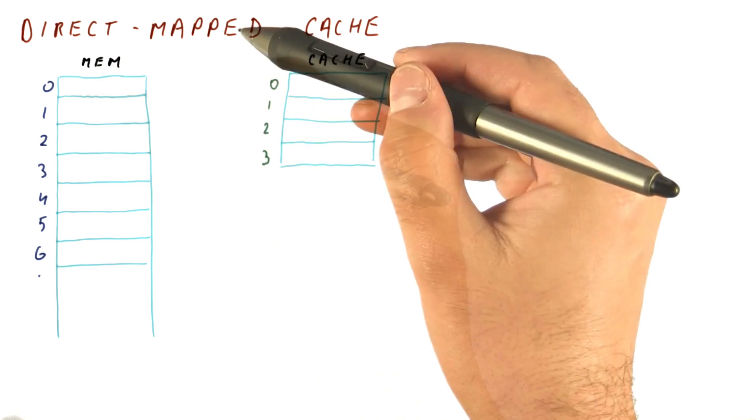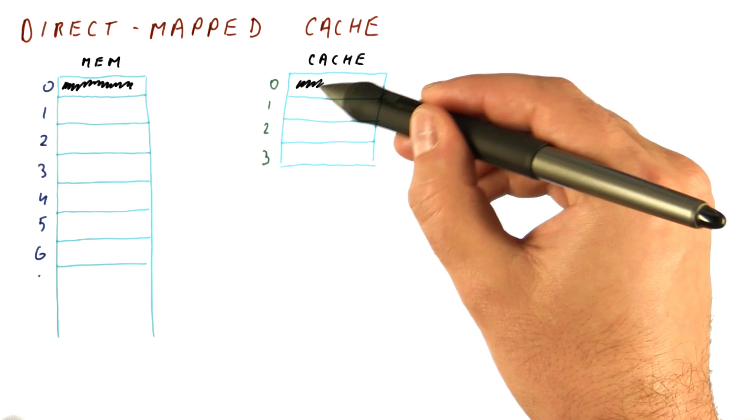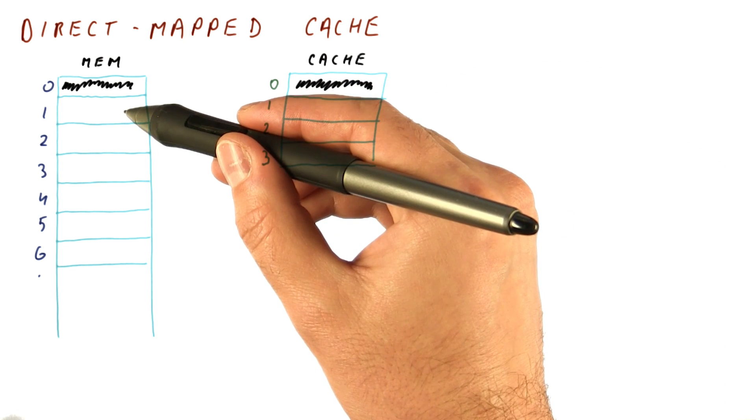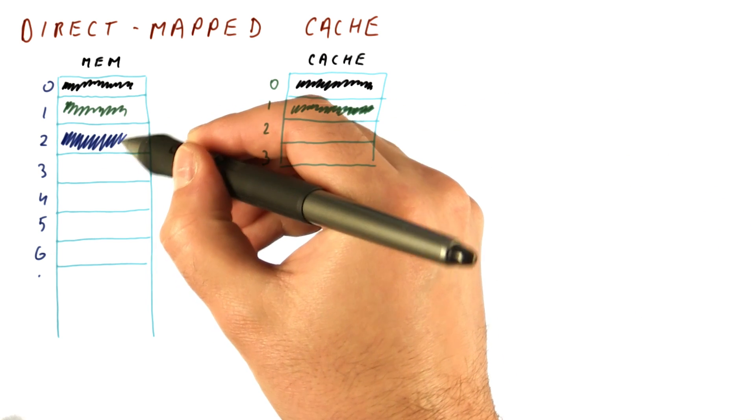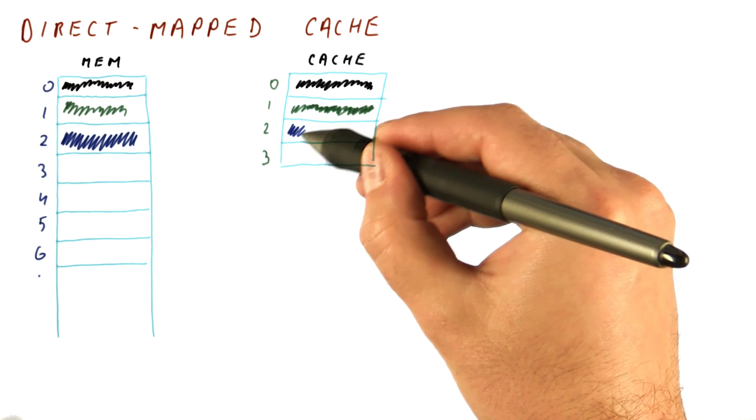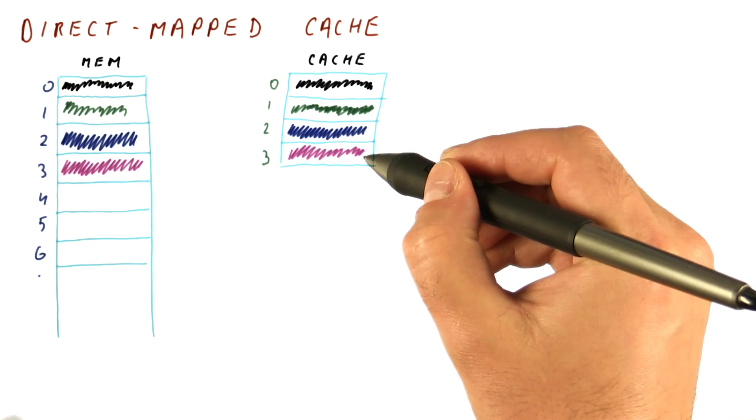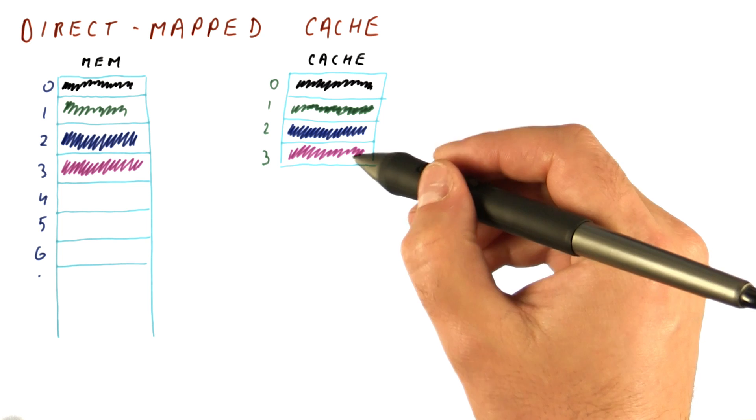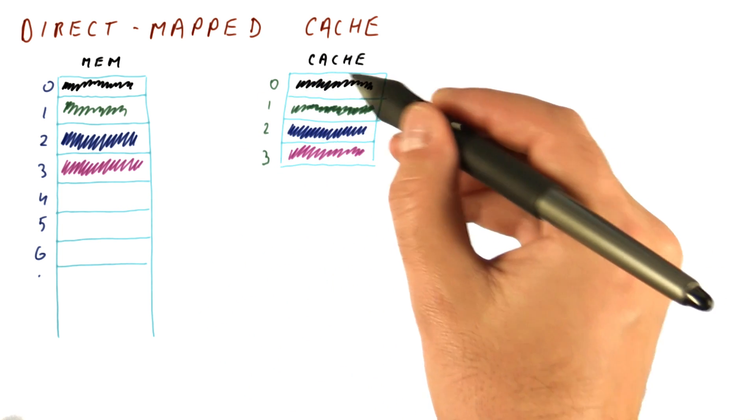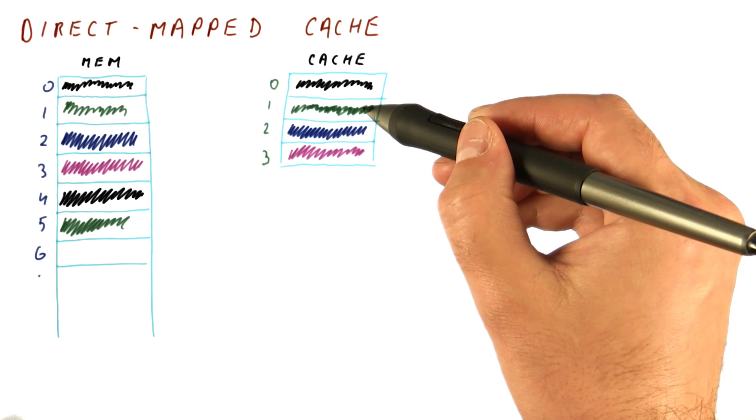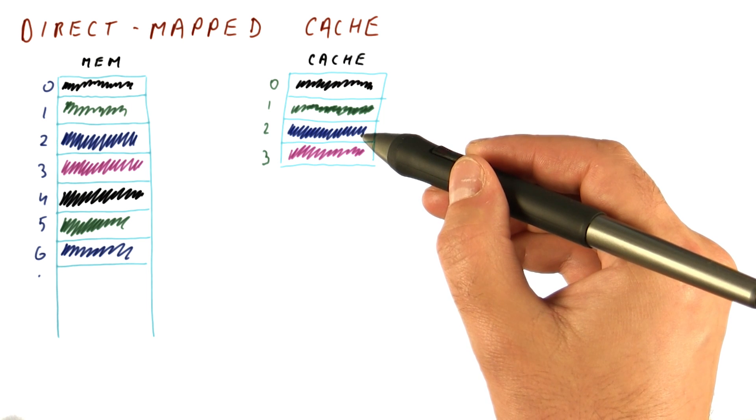And in a direct map cache, block 0, if it's in the cache at all, needs to be in line number 0. Block 1, if it's in the cache at all, will be in slot number 1. Block number 2, if it is in the cache at all, has to be in this place here. Block number 3, if it is in the cache at all, has to be here. And now block number 4 will again get to map to line number 0. Block number 5 maps to line number 1. Block number 6 maps to line number 2, etc.